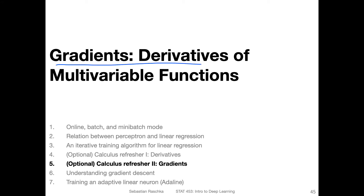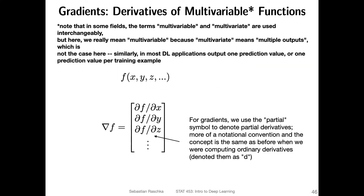Let's talk about gradients - the derivatives of multivariable functions. We are interested in functions that have multiple inputs. Note that the terms multivariable and multivariate are sometimes used interchangeably. Multivariate is usually the more common term, but here we really mean multivariable, because multivariate can mean multiple outputs. We are currently only focusing on the case where we have multiple inputs and a single output.